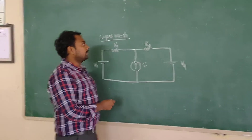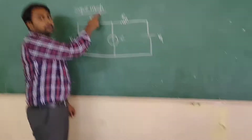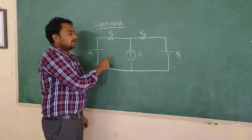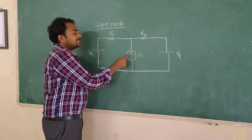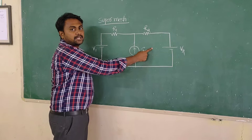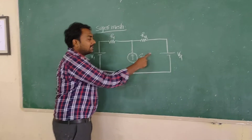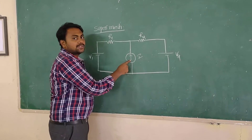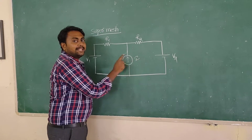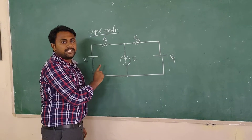Good morning. Today we are going to see the concept of super mesh. Super mesh is the concept where there is a current source in between the two loops — a current source which is associated with the two loops. That kind of situation we are calling as a super mesh.